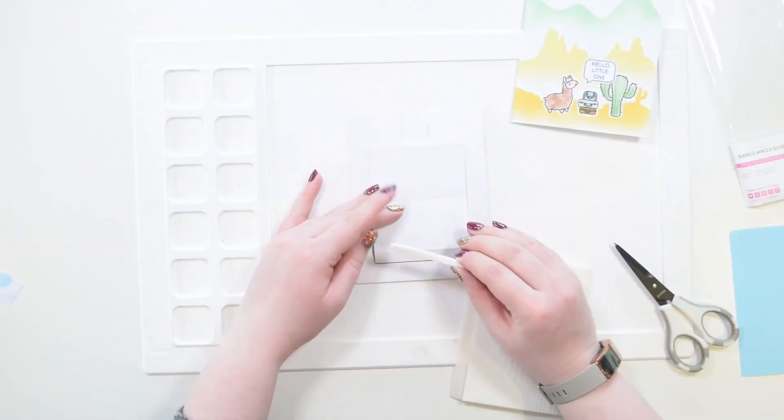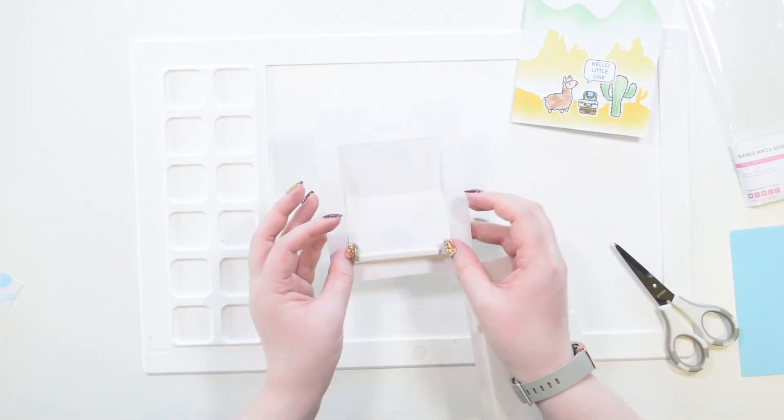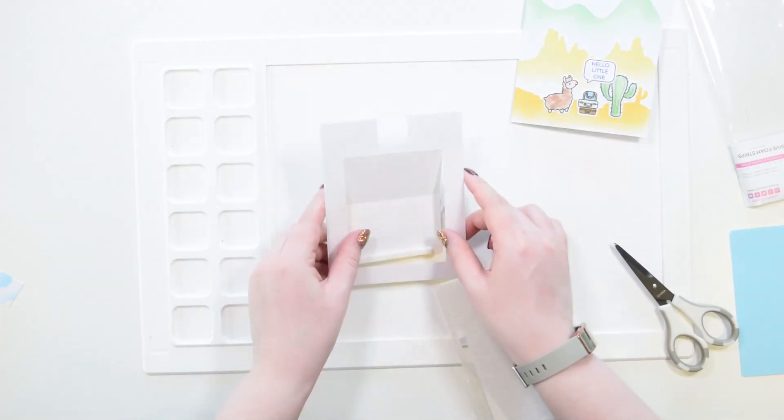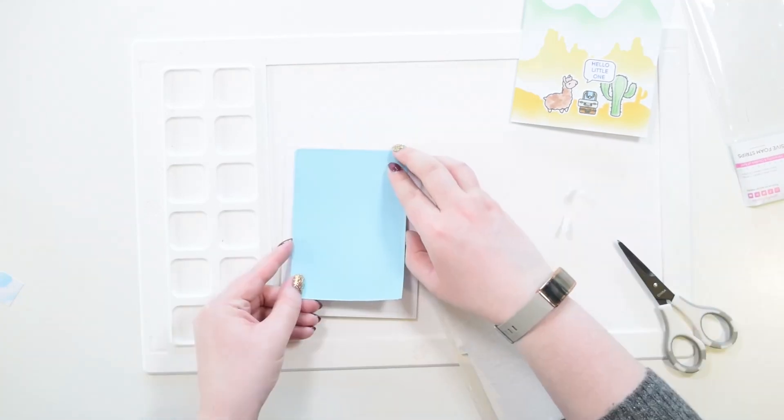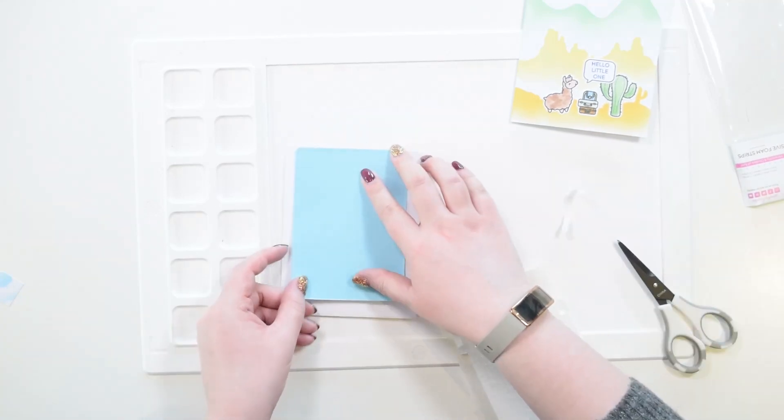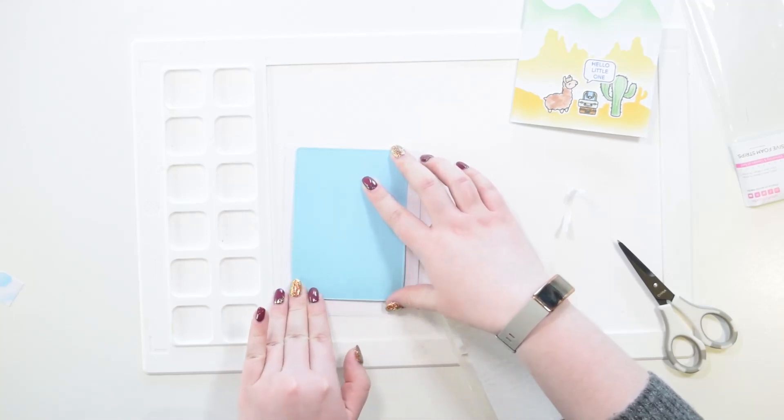First I'm just taking a foam strip and attaching it to this bottom creased tab on the slider section on my card panel. I'm then taking the pull-out panel in Ice Blast and attaching it there, making sure everything is nice and straight.